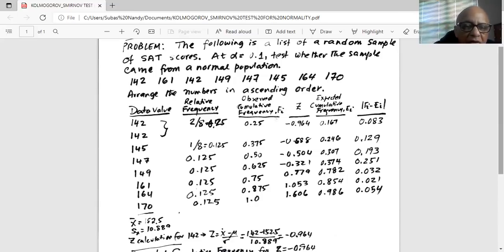Then I calculate the observed cumulative frequency, which is, if I start with the first one is 0.25. Then the next one is 0.25 plus 0.125 is 0.375. The next one is 0.375 plus 0.125 is 0.5 and so forth. So 0.5 plus 0.125 is 0.625, 0.625 plus 0.125 is 0.75, and 0.75 plus 0.125 is 0.875, and 0.875 plus 0.125 is 1.0.